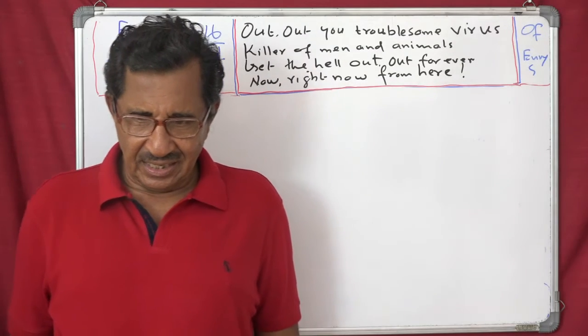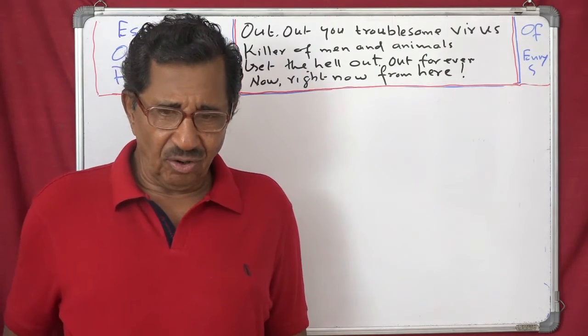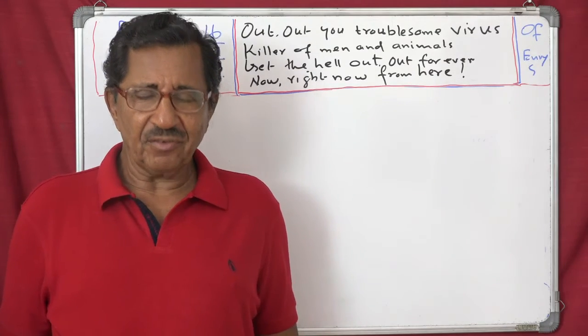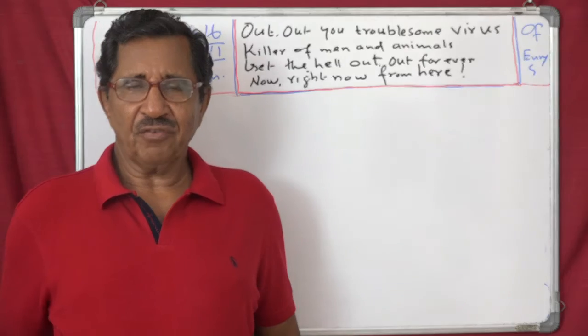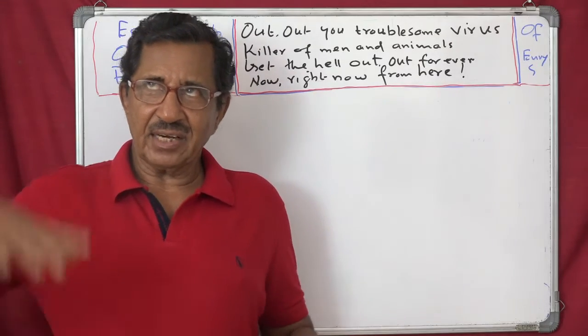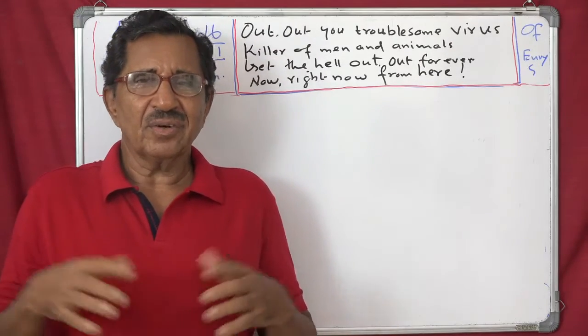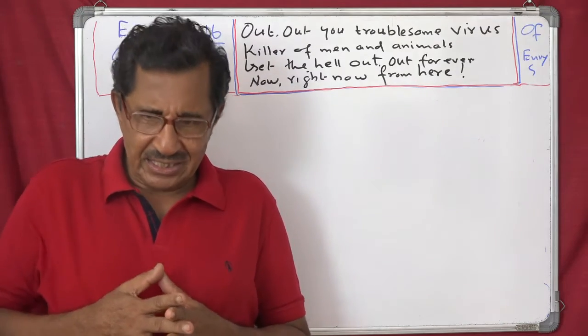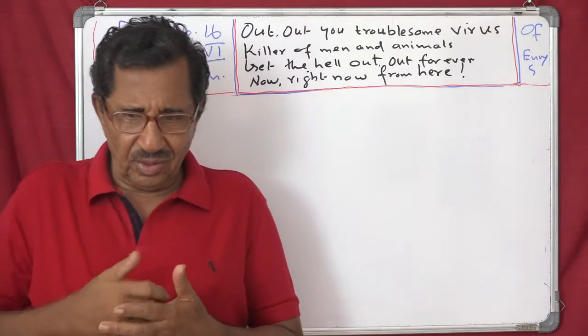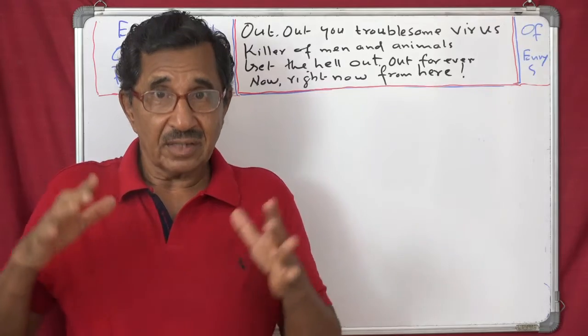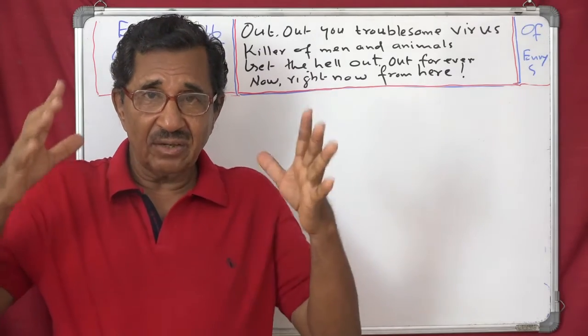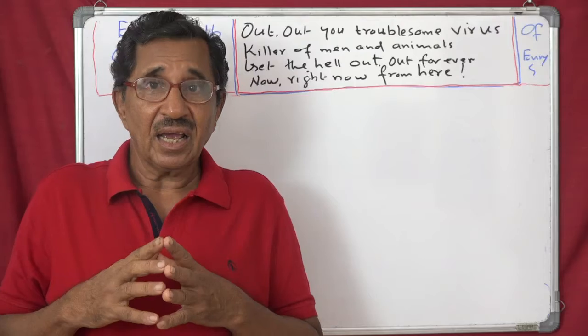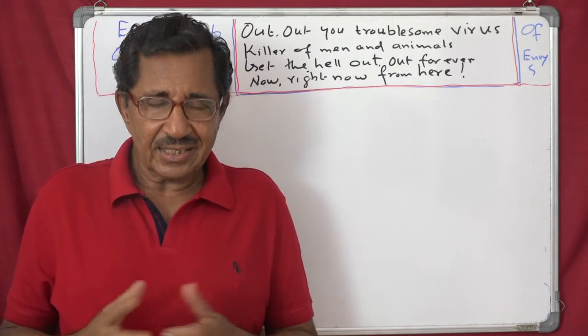And envy is as the sunbeams that beat hotter upon a bank or steep rising ground than upon a flat. So on a flat ground, when the rays of the sun fall, not very hot. But on the other hand, at a steep rising ground or on the bank of a river, the sunbeams beat - the heat of the sunbeams are hotter.